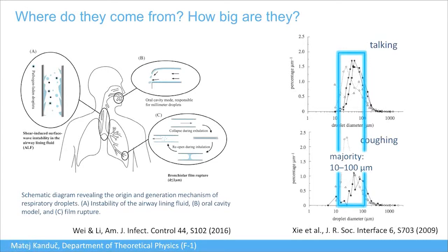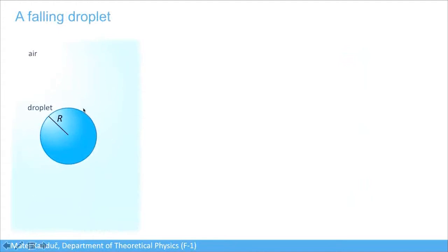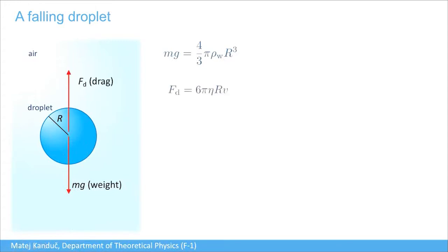What happens to these droplets when they enter the air? We start simple and gradually increase complexity. Imagine a water droplet in air: the most obvious force is gravity pulling downward, equal to the volume times water density times g. The droplet starts moving downward and this motion is opposed by air drag, given by Stokes law, which is proportional to the radius and viscosity of the air.